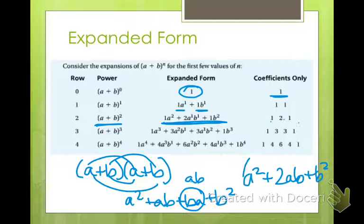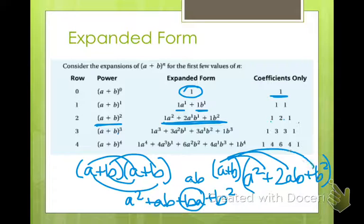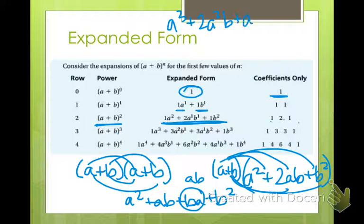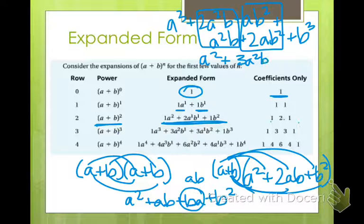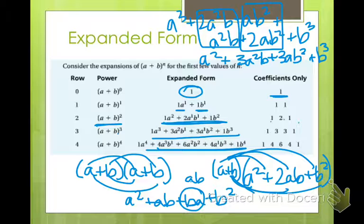For a plus b cubed, you take a squared plus 2ab plus b squared and multiply it times a plus b again — multiply a times everything, multiply b times everything. You get a cubed plus 2a squared b plus ab squared plus a squared b plus 2ab squared plus b cubed. Combining like terms gives you a cubed plus 3a squared b plus 3ab squared plus b cubed. And then you multiply again to get the next power.